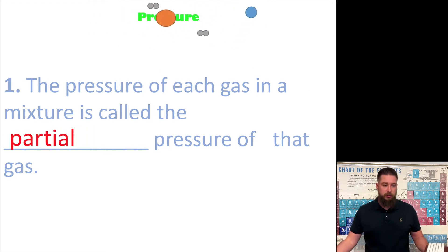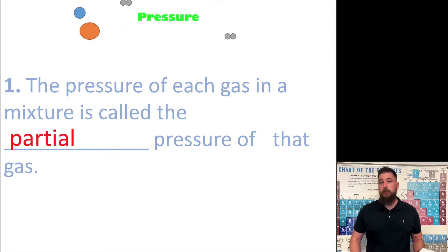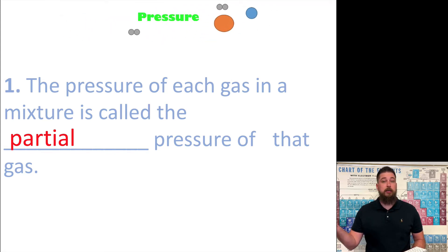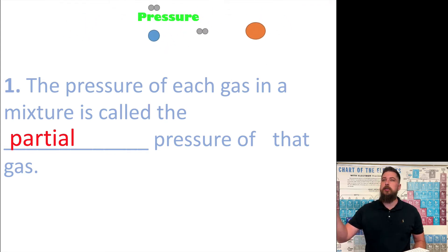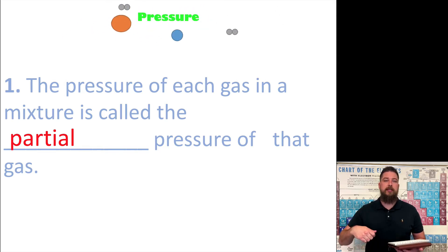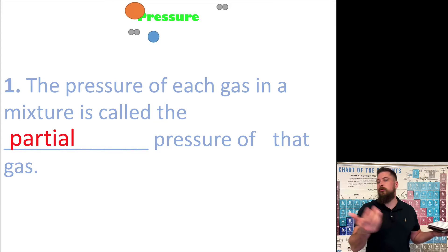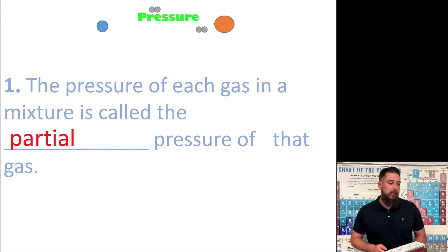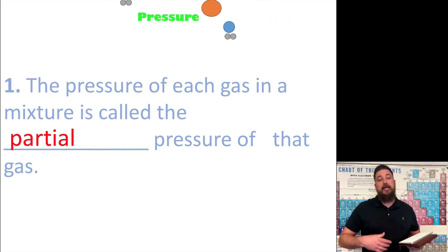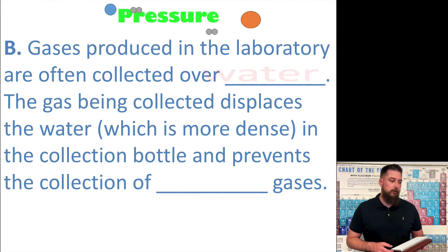The pressure of each gas is called the partial pressure. So for example, the oxygen in the air has a partial pressure that is exerted on the things around us. Nitrogen has its own partial pressure, and carbon dioxide has its own partial pressure as well.